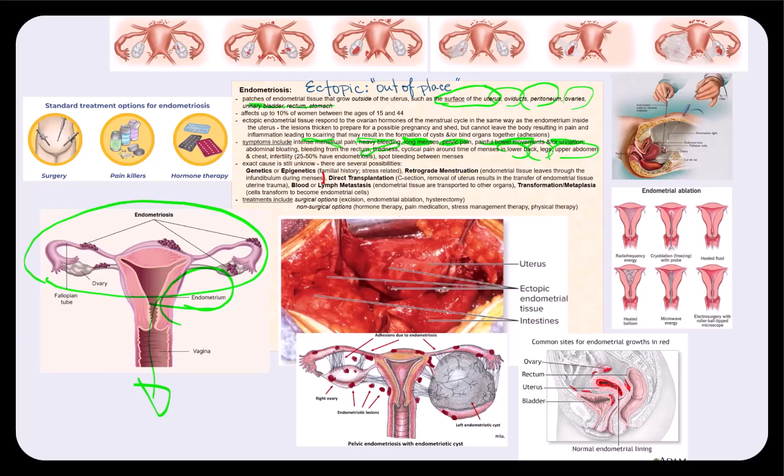The next possibility is direct transplantation. This is when the uterus experiences some type of trauma, such as a C-section, where sometimes the endometrium can detach from inside the uterus and then transfers to another site because of this uterine trauma.